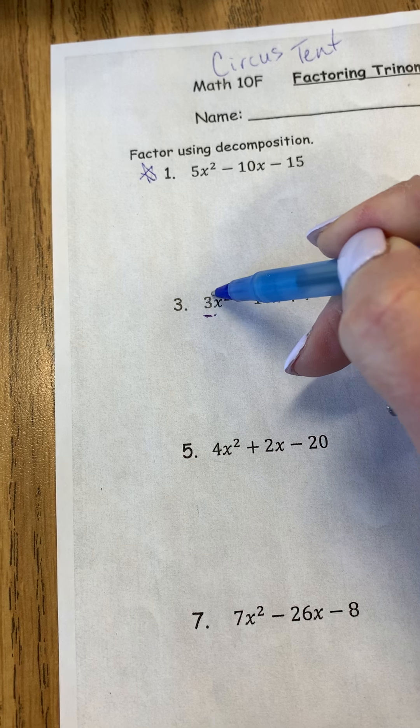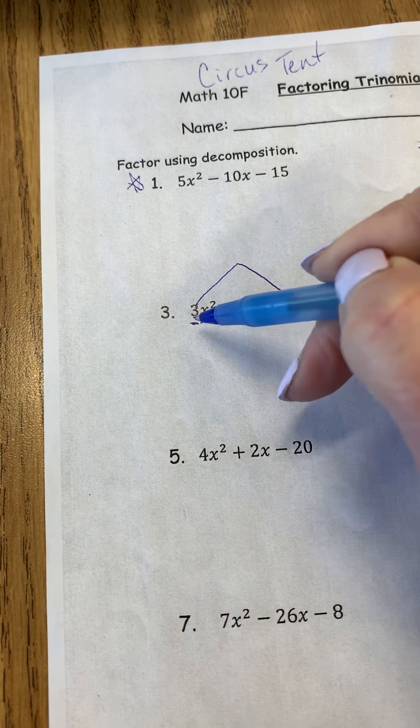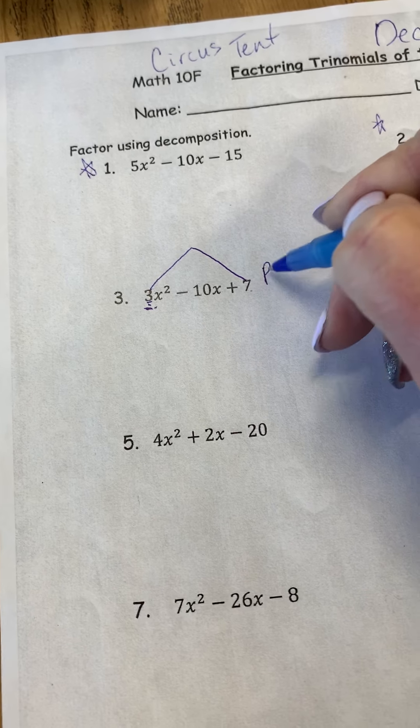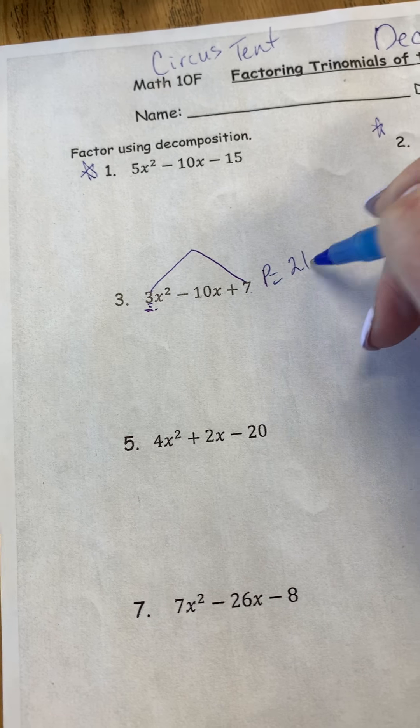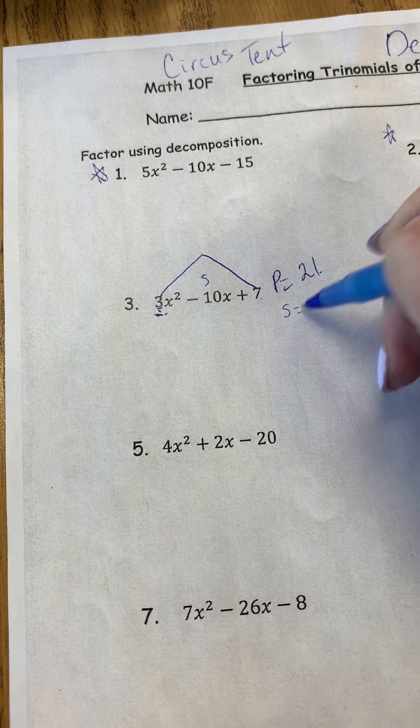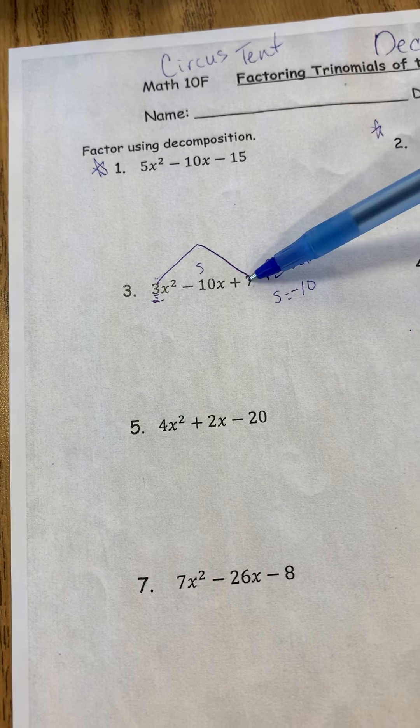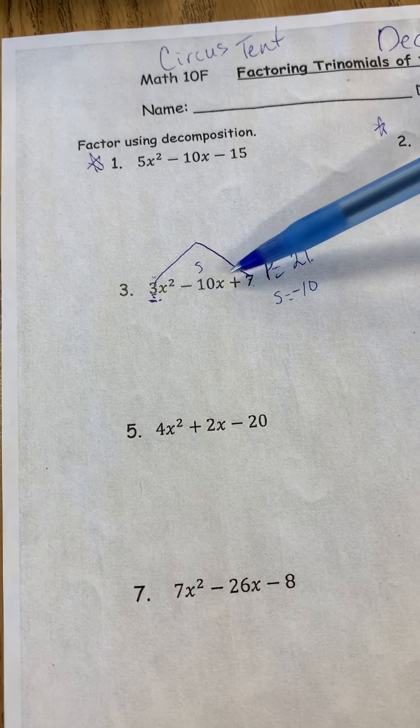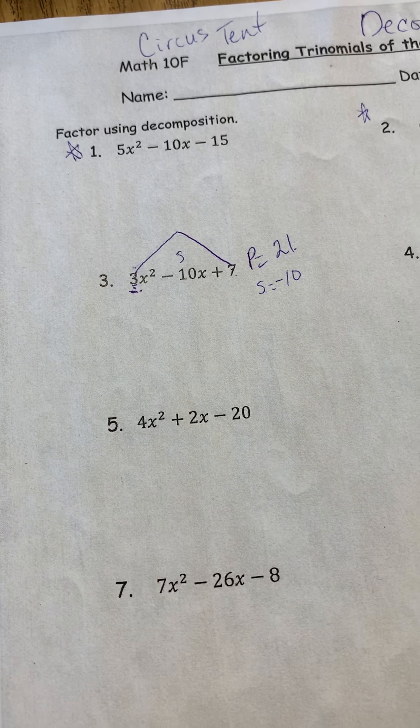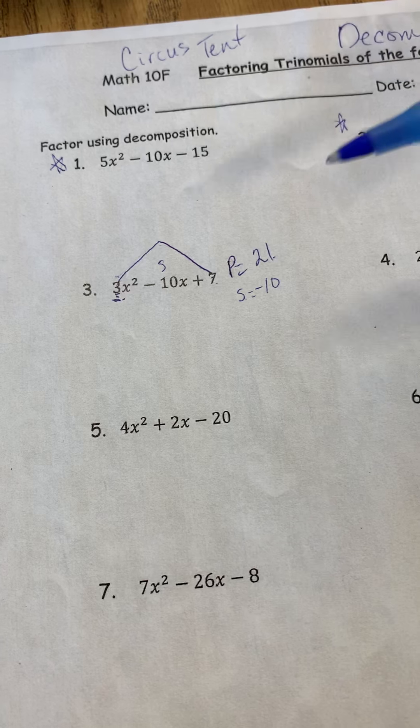So this is maybe why I call it circus tent. In order to find the product sum, we have to multiply the first term's coefficient with the constant in the back, and that's going to become our new product. So we need to find two numbers multiplied together to give us 21, and the sum's going to stay the same. We do factoring by decomposition, which becomes factoring by product sum. Now we're going to factor by grouping shortly, and lastly, we're going to factor by greatest common factor. This is the big kahuna of all of them. This includes everything.